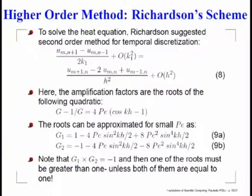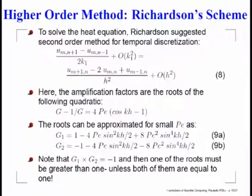Since the space discretization is second-order accurate in h², why not make the time discretization also second-order? The idea is to apply the equation at level j and relate the solution one level up to one level below. This is also called the leapfrog method — like the children's game where you jump over leaving one square, similar to checkers.